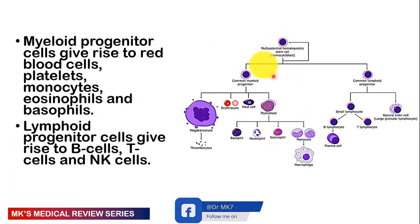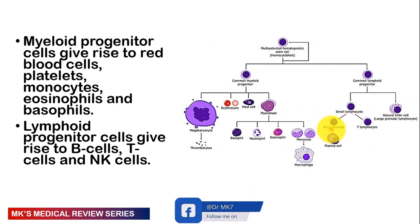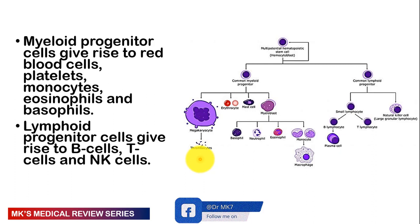Here's a schematic. You have a hemocytoblast — a multipotent hematopoietic stem cell — giving rise to a common myeloid progenitor cell and a common lymphoid progenitor cell. The common lymphoid progenitor can give rise to small lymphocytes or a natural killer cell, a large granular lymphocyte. Small lymphocytes are either B lymphocytes, which differentiate into plasma cells producing antibodies, or T lymphocytes. The myeloid progenitor gives rise to megakaryocytes forming platelets, erythrocytes carrying oxygen and CO2, mast cells, and myeloblasts giving rise to basophils, neutrophils, eosinophils, and monocytes that become macrophages in tissues.